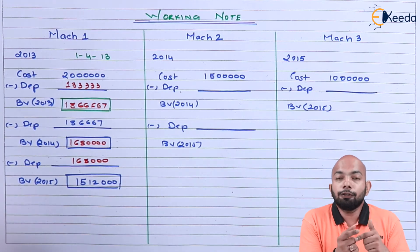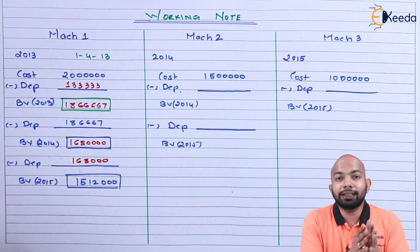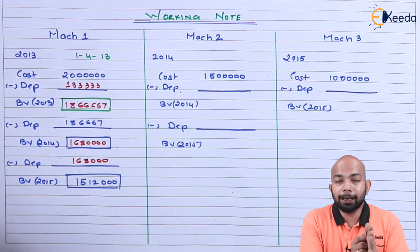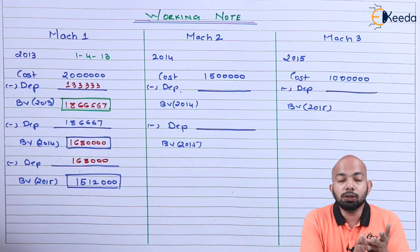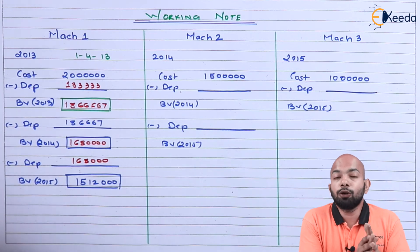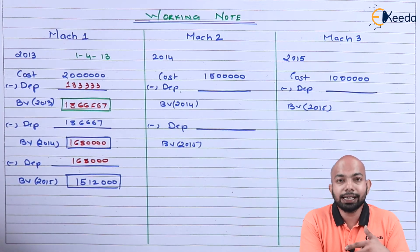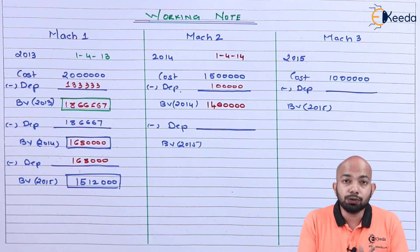Post this we'll do the profit or loss computation, but that will be in the next sheet. Let's start with the working for Machine 2. The rate of depreciation is 10% on written down value method. For Machine 2, we have two years to calculate depreciation: 2014 and 2015. For 2014, the tenure is eight months as this machine was also purchased in April. So eight months for 2014 and 12 months for 2015.